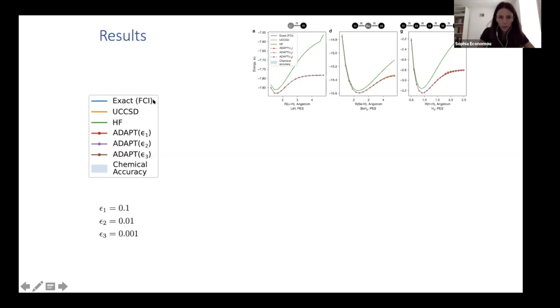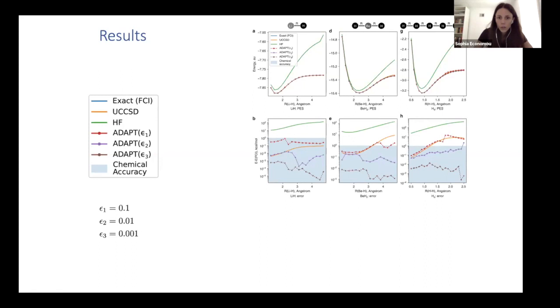So we're comparing this to the exact solution. These are small enough molecules that we can solve them exactly, to UCCSD, Hartree-Fock, which is not expected to do well, and then three different levels of ADAPT depending on where you set the threshold. And these show the energy as a function of interatomic distance. But since here you cannot see really not much what's going on, I'm going to just pull out the error. So here you see the same x-axis, but the y-axis is now the error and it's logarithmic. And you see that ADAPT outperforms UCCSD in most of the cases.